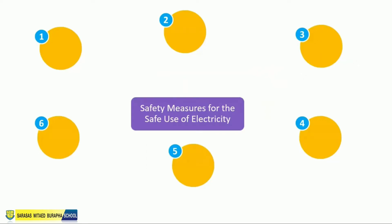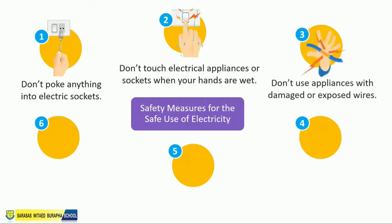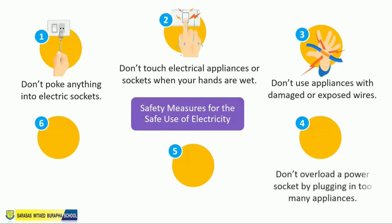There are several safety measures we can take to prevent electric shocks and short circuiting. One: don't poke anything into electric sockets. Two: don't touch electrical appliances or sockets when your hands are wet — water can conduct electricity.